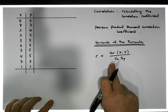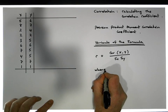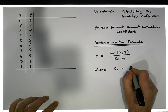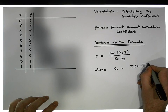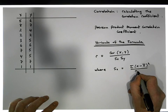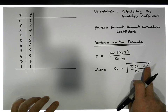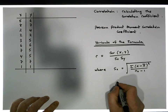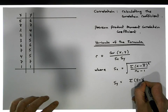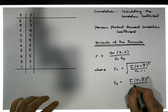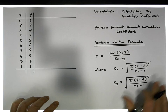We haven't defined what the covariance is yet — the standard deviation is pretty straightforward. The standard deviation s of x is equal to the square root of the sum of squared differences between the x observations and their associated sample mean, divided by the sample size minus 1. And s of y is the same thing but for the y observations: the square root of the sum of squared differences between the y observations and their sample mean, divided by the sample size minus 1.